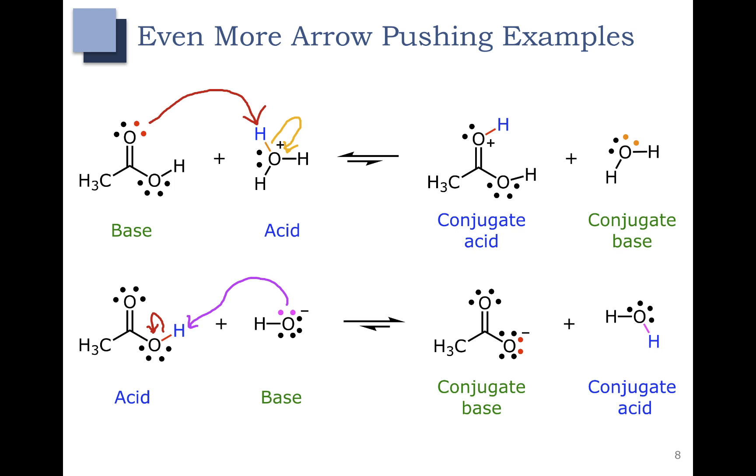Again, we check to make sure that our charges balance. We have an overall negative charge on the left and an overall negative charge on the right. This concludes our video on arrow pushing in acid-base reactions.